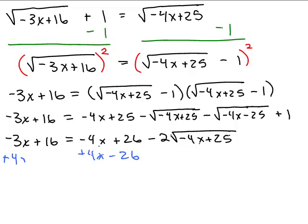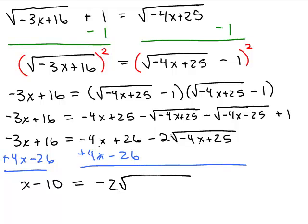So add 4X minus 26 to both sides and that gives me X minus 10 equals negative 2 square root of negative 4X plus 25.